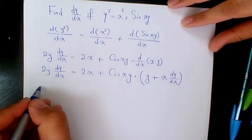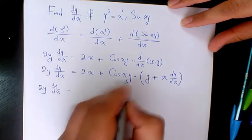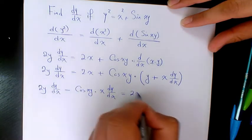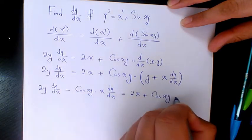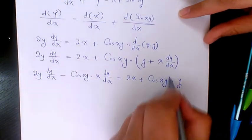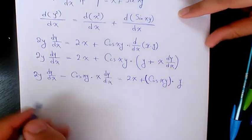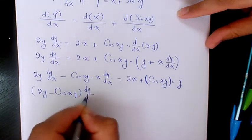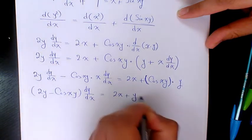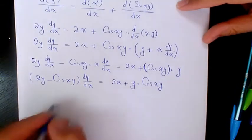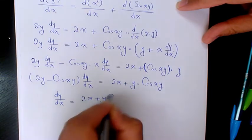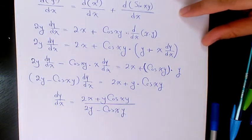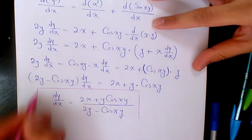Now rearranging, we move the dy/dx terms to one side: 2y dy/dx minus cos(xy) · x dy/dx = 2x + cos(xy) · y. Factoring out dy/dx gives (2y - cos(xy)) dy/dx = 2x + y·cos(xy). Therefore dy/dx = (2x + y·cos(xy)) / (2y - cos(xy)), and that's the final answer.